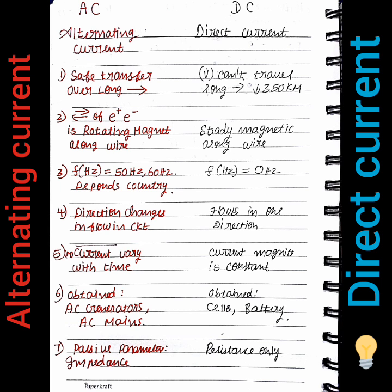In AC current, the current magnitude varies in time — positive and negative. This is represented by the AC mains and a 2-pin plug showing the direction of AC mains. For DC, the current magnitude is constant.